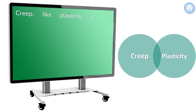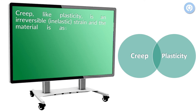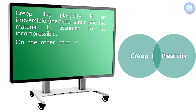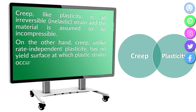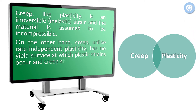Creep, like plasticity, is an irreversible strain and the material is assumed to be incompressible. On the other hand, creep, unlike rate-independent plasticity, has no yield surface at which plastic strains occur, and creep strains are assumed to develop at all non-zero stress values.